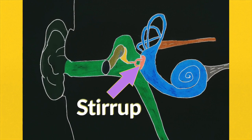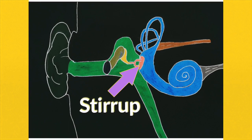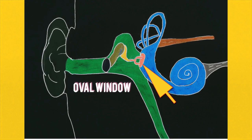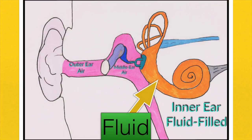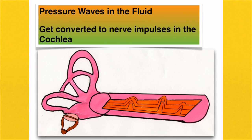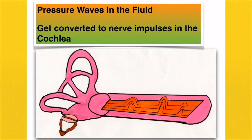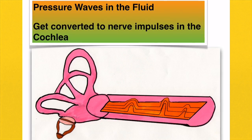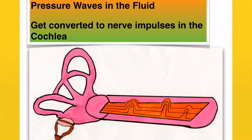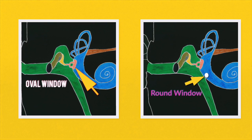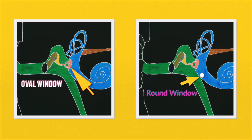Sound waves hit against the eardrum causing it to vibrate, which in turn makes the hammer, the anvil and then the stirrup vibrate. The stirrup is connected to the oval window and when it vibrates against this oval window it passes the vibrations onwards into the fluid-filled cochlea. These vibrations cause pressure waves to form in the fluid of the cochlea, which get converted to nerve or electrical impulses. The pressure waves cause hair receptor cells in the cochlea to move, generating the nerve impulse. These impulses exit the cochlea via the auditory nerve and go to the brain for interpretation. The vibrations enter via the oval window and pressure waves dissipate out via the round window.